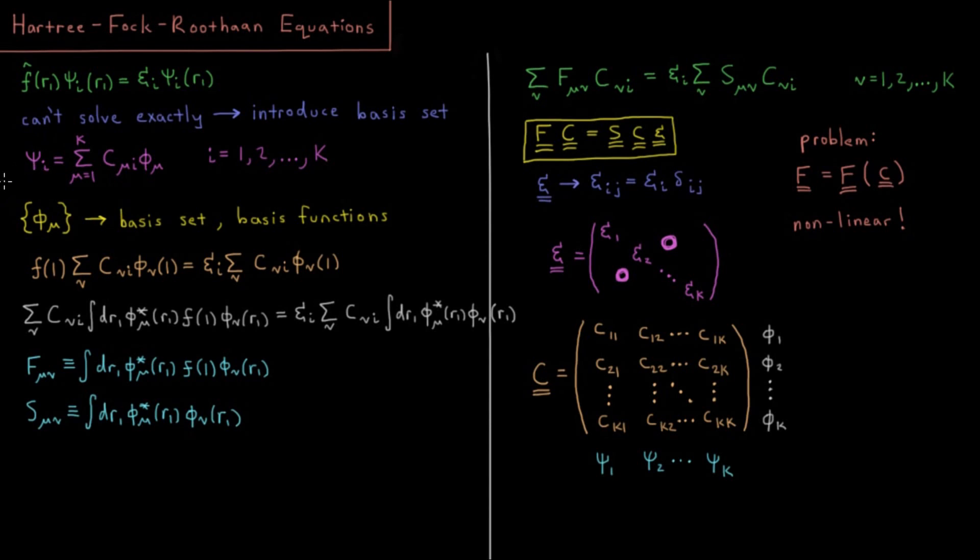If we want to look at a particular spatial orbital psi i, the way we're going to represent that is as a sum from mu equals 1 to k of c mu i phi mu. So phi mu is what we call some basis function, and there are k basis functions altogether which form a basis set. If the basis set is sufficiently good and sufficiently complete, then we can represent pretty much any spatial orbital we desire, any function of three-dimensional space, as a linear combination of this basis set.